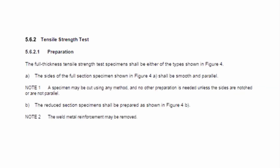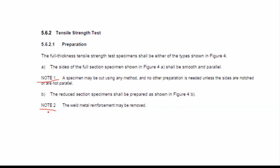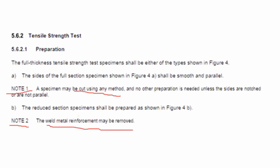Chapter 5 of API 1104 discusses the qualification of welding procedures, which is why tensile specimen preparation is in this section. As you can see in Note 1 and Note 2, the specimen may be cut using any method — API 1104 does not restrict the method of cutting, so Note 1 is correct. Note 2 corresponds to letter D, indicating that the weld reinforcement may be removed. So the answer is letter E — both C and D are correct.